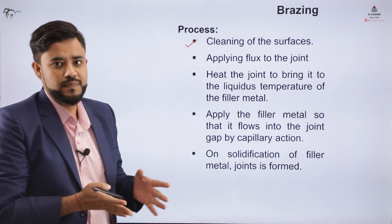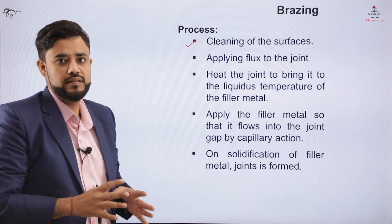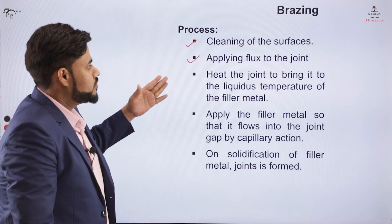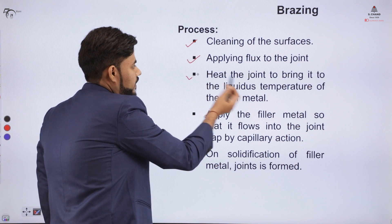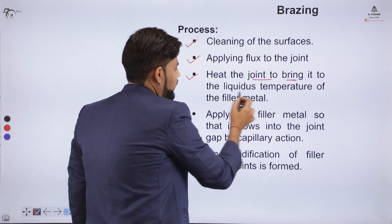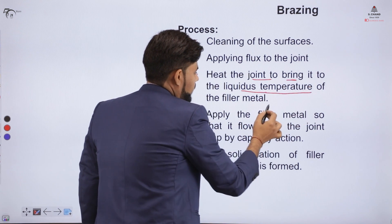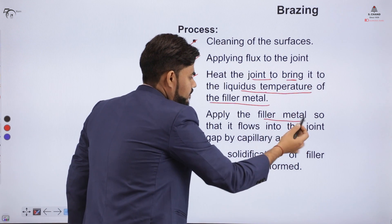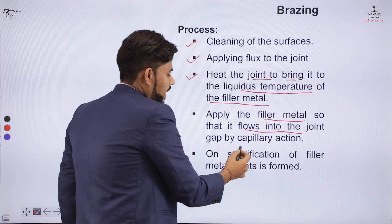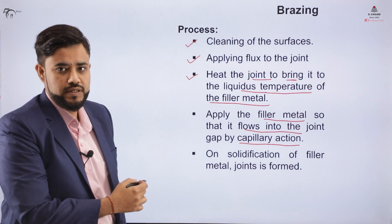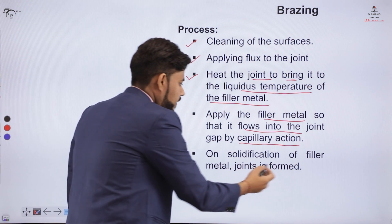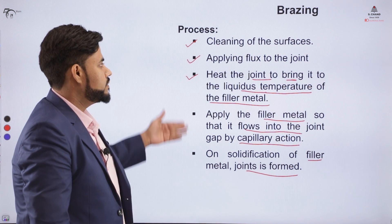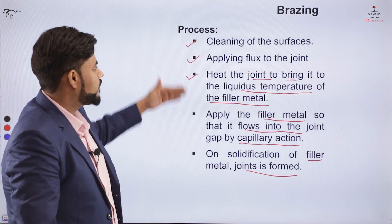The brazing process involves the following steps: first, cleaning of surfaces — you have two base metals and you must clean their surfaces. Then apply flux on the surface of the joint. Then heat the joint, and after heating bring the filler material to a liquid state and apply it in between the gap so it flows easily via capillary action. On solidification of the filler material, the joint is formed.